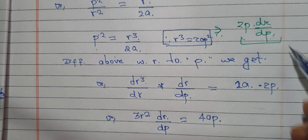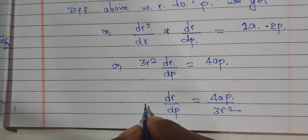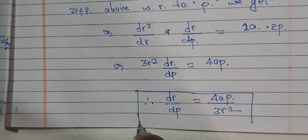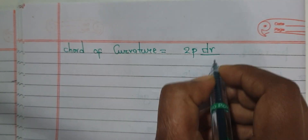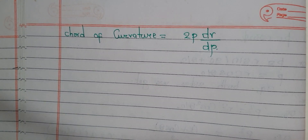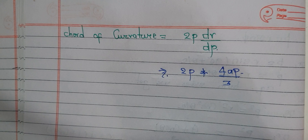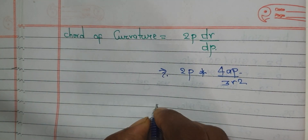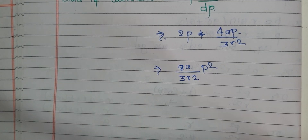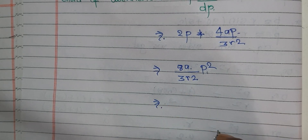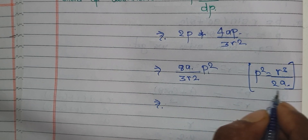Now putting dr/dp = 4ap/(3r²) into the code of curvature formula: Code of Curvature = 2p × (4ap)/(3r²) = 8ap²/(3r²). Since p² = r³/(2a), substituting gives Code of Curvature = 8a × r³/(2a) / (3r²) = 4r/3.